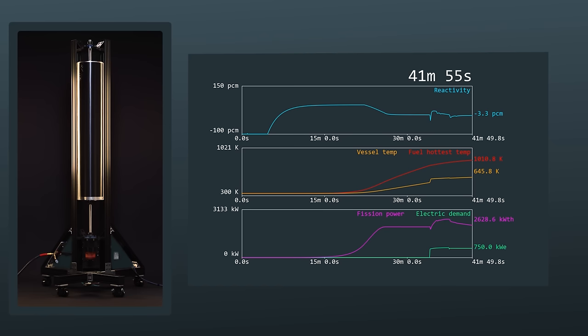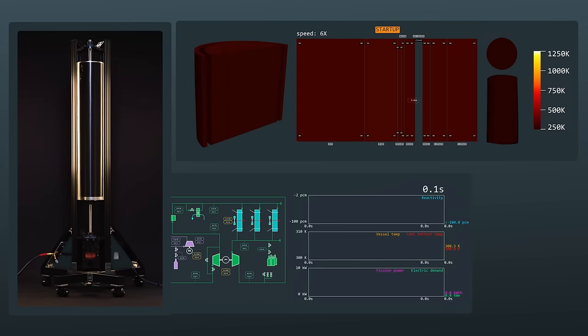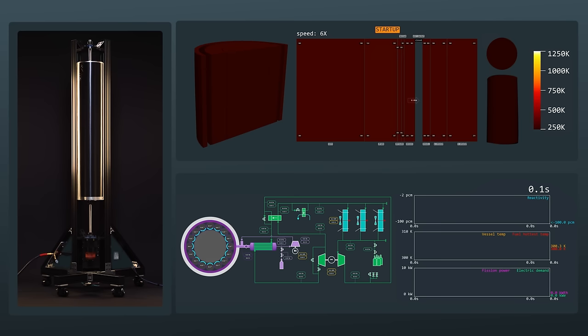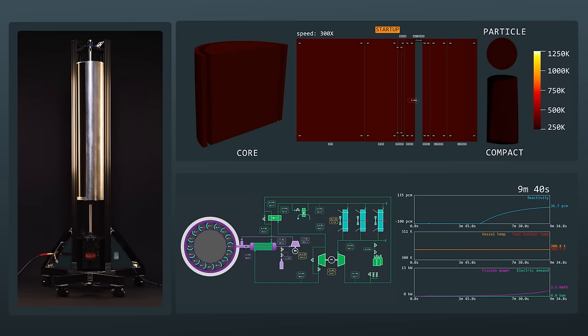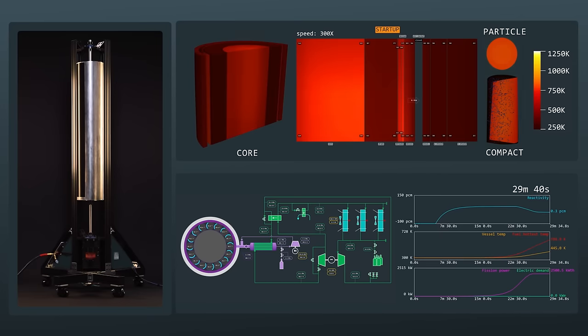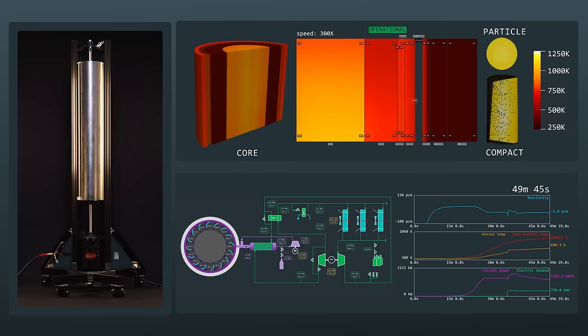SimEngine will now demonstrate integrated execution of the reactor digital twin with its real-time control system as it goes through a startup. Drums are rotated to insert reactivity until criticality is achieved. At this point, the neutron population starts growing exponentially. When the core starts to heat up due to the release of fission energy, the control system further turns the drums in order to maintain criticality. The drums move by an additional 30 degrees to offset the core's negative temperature feedback coefficient.